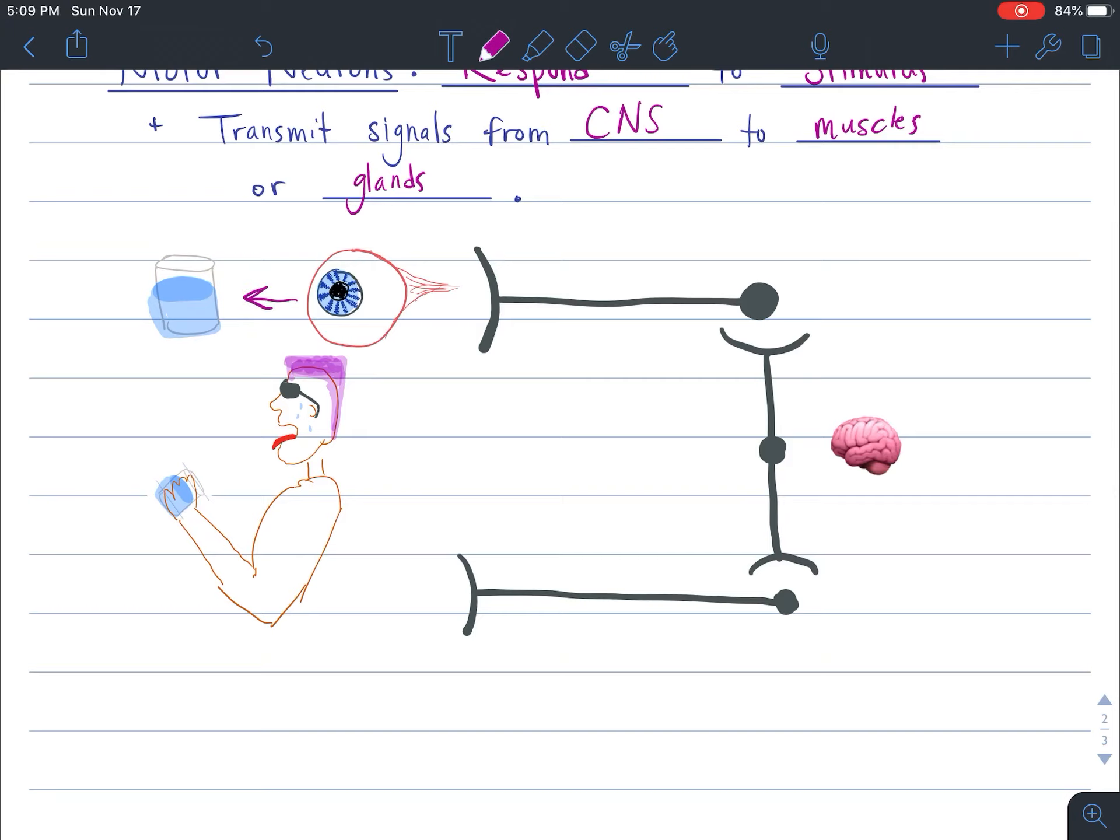So let's say that we see some water, like, oh my gosh, I'm so thirsty. So our eye sees the water, and it sends that signal down our sensory neuron. And the sensory neuron then sends that signal down the relay neuron. And then relay neurons are connected to motor neurons, and those motor neurons then have us pick this glass of water up and take a drink.